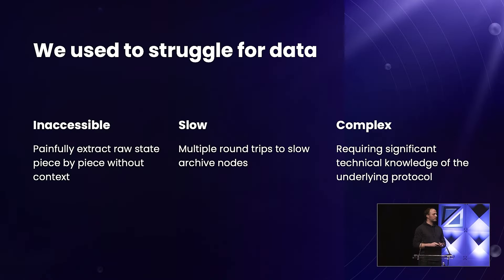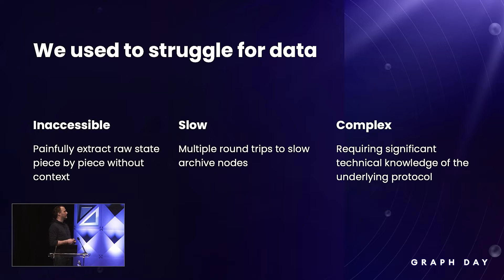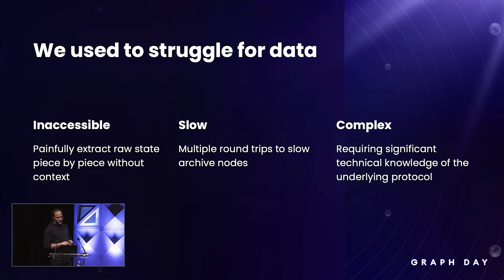For the blockchain, it's just not a primary concern to make data access convenient — access at all, to be quite frank. We have been in this struggle, me and my team, to solve this problem, and it was painful. Let's call it a dark ages. We experienced this first-hand before subgraphs were a thing, because by default, data access on the blockchain is slow — you have to do multiple round trips if you want to fetch data. It is complex because you need really intricate knowledge about the smart contracts that encode this information. But also, it is just really inaccessible.